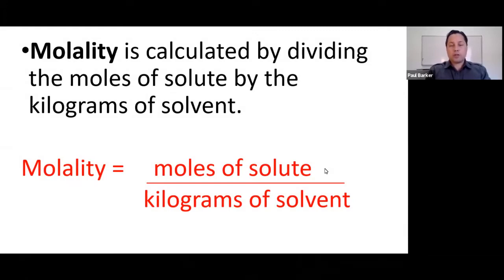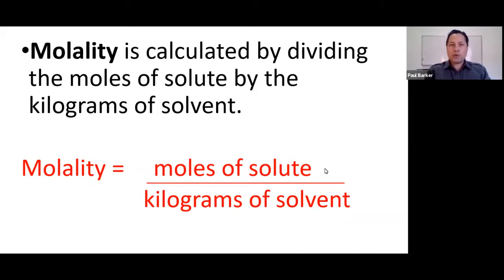We're going to continue our conversation on how to measure the concentration of a solution by talking about molality. Molality is calculated by dividing the moles of solute by the kilograms of solvent. That is very similar to molarity except the denominator is different. In molarity you have moles of solute as the numerator but the denominator is liters of solution, whereas in molality the denominator is kilograms of solvent. Now let's take a look at some examples of how to solve for molality.